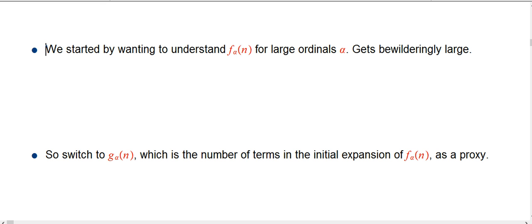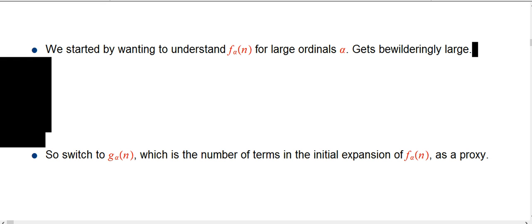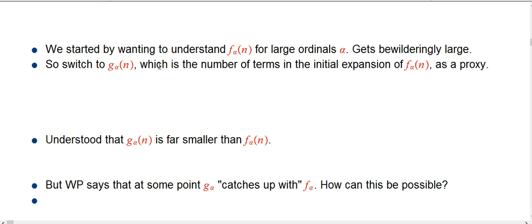Here's the way I want to think of starting it. We started out by wanting to understand the fast-growing hierarchy, the values of f_α(n) for really large ordinals α. But it was getting bewilderingly large, and in the last few videos when I started talking about the ordinal collapsing functions, we switched to g_α(n), the slow-growing hierarchy.